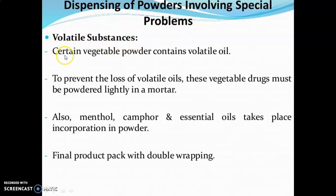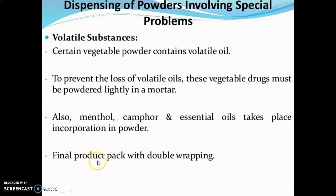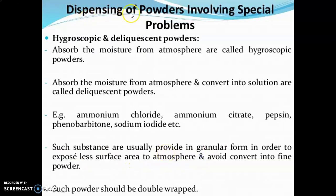The first problem is volatile substances. Certain vegetable powders contain volatile oils. To prevent the loss of these volatile oils, these vegetable drugs must be powdered lightly in a mortar. Also, menthol, camphor, and essential oils are incorporated into the powder final product and packed with double wrapping.